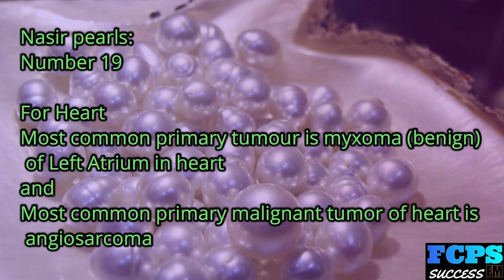Nasir Pearl number 19: For heart tumors — the most common primary benign tumor is myxoma, located in the left atrium. The most common primary malignant tumor of the heart is angiosarcoma.